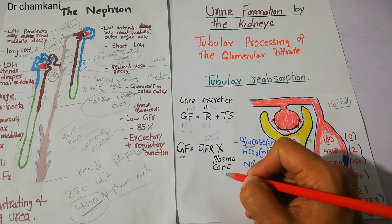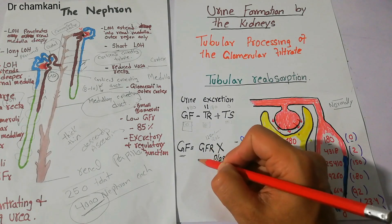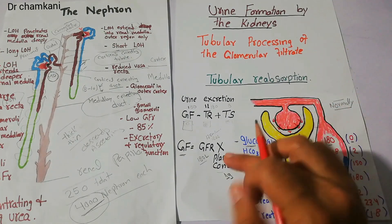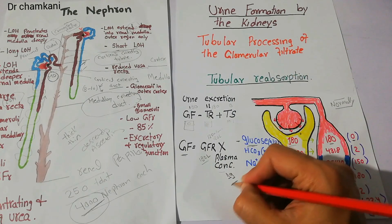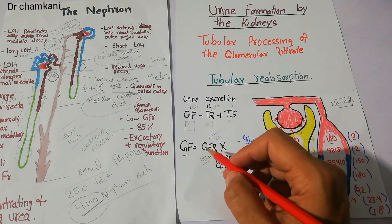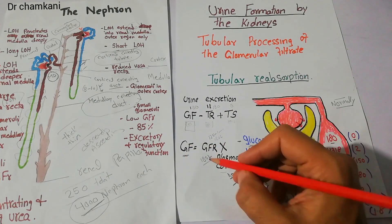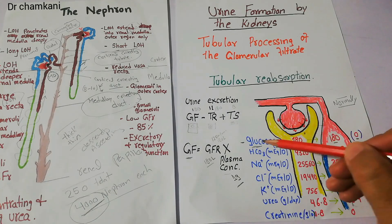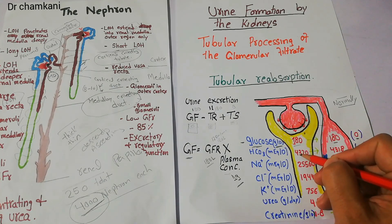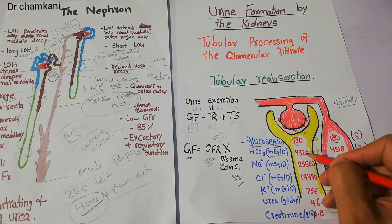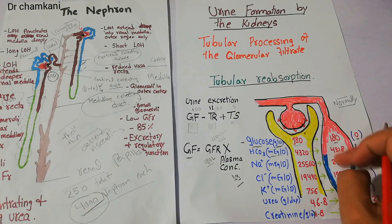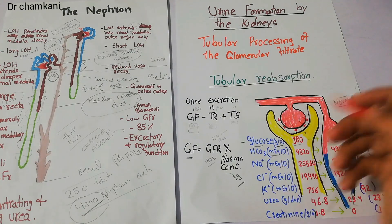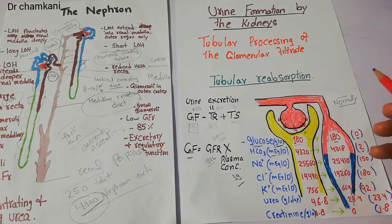If the plasma concentration of glucose is 1 gram per liter and the GFR is 180 liters per day, then filtration of glucose per day is 180 × 1 = 180 grams per day, and its reabsorption is also 180 grams, so zero glucose is excreted in urine. Coming to bicarbonate: around 4,320 milliequivalents per day are filtered, 4,318 are reabsorbed into the blood, and only 2 milliequivalents — a very minimal amount — are normally excreted in urine. Glucose and bicarbonate are almost fully reabsorbed into the peritubular capillaries.